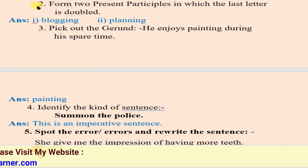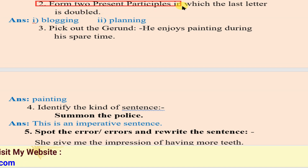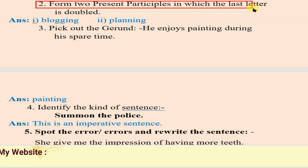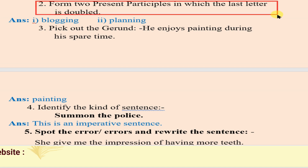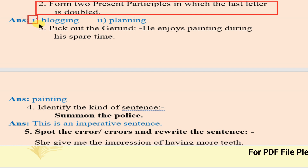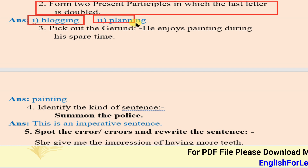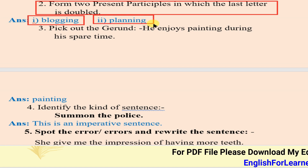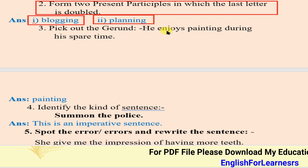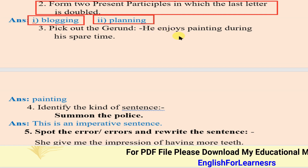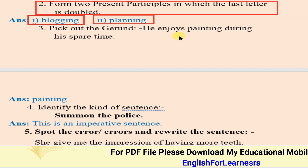Next, activity number two: form two present participles in which the last letter is doubled. As you know, the present participle or gerund — let's see the answers directly. The examples of present participles where the last letter is doubled are: 'blogging' (double g) from 'blog', and 'planning' from 'plan'.